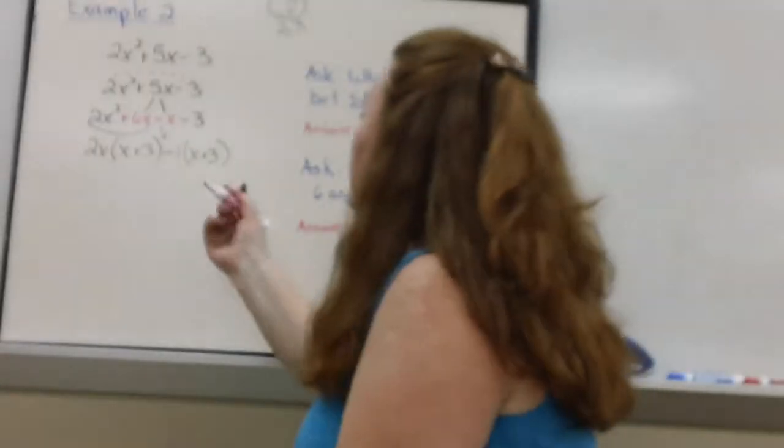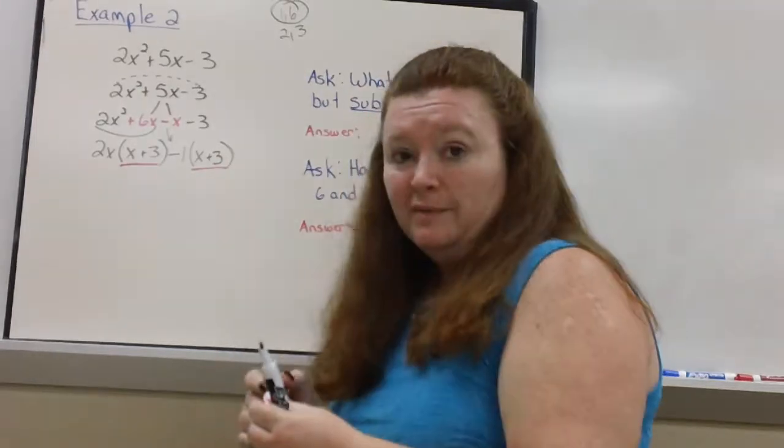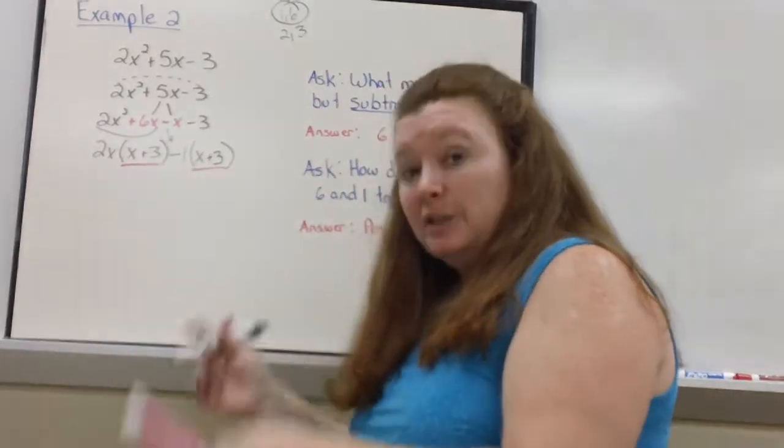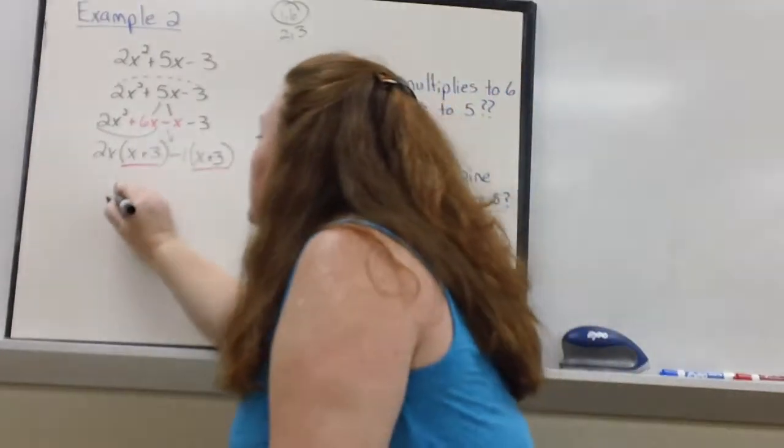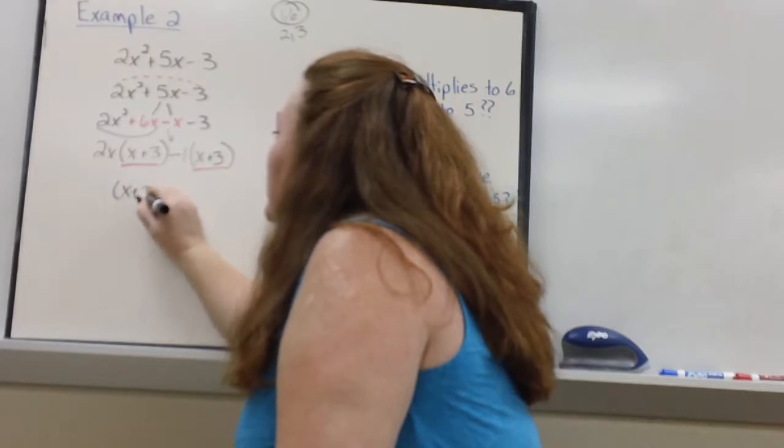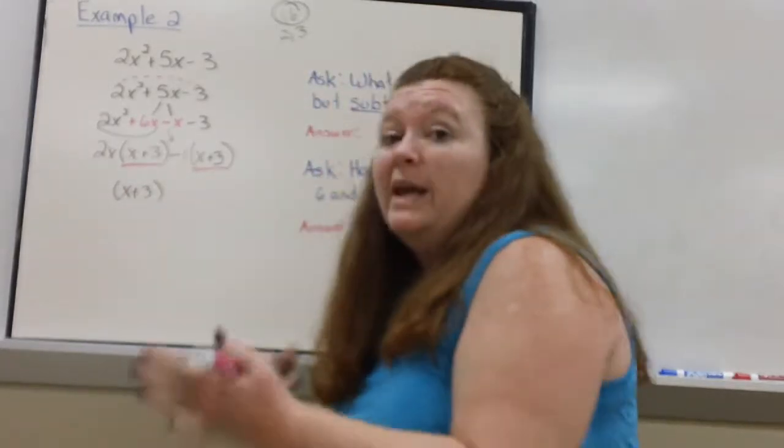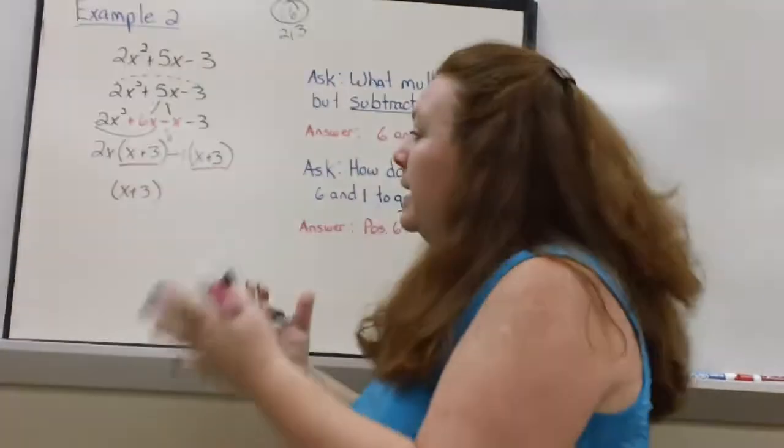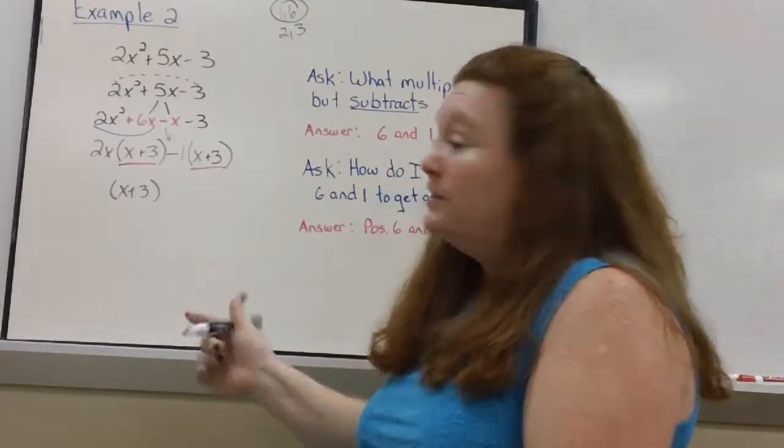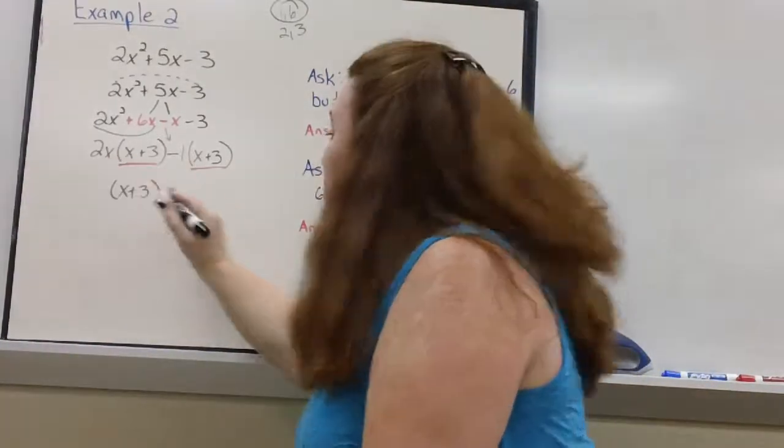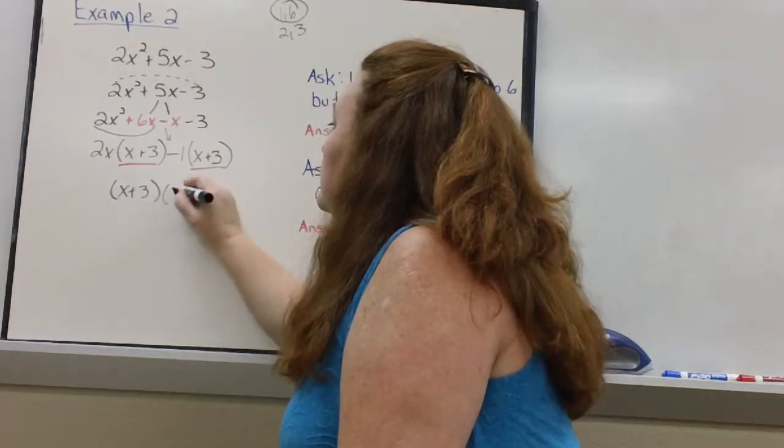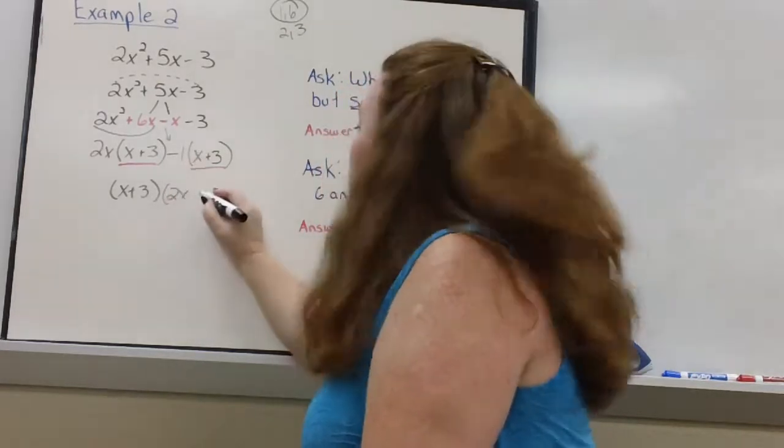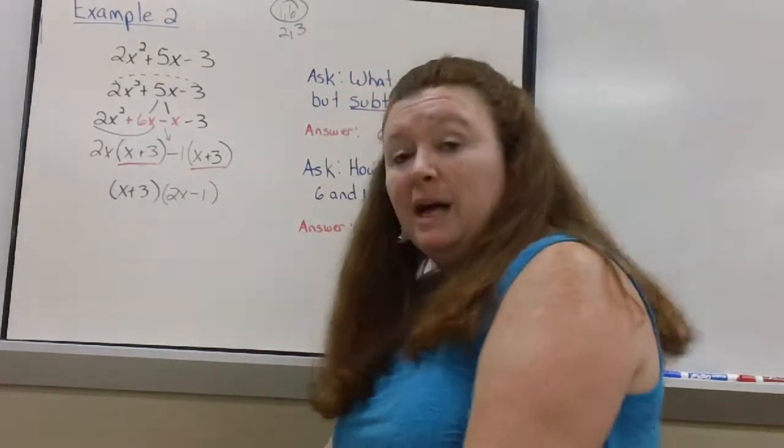So I have two terms with a common factor of an x plus 3. So I'm going to take the x plus 3 out to the front. And ask myself, when I divide both terms by x plus 3, what's left? Over here I have a 2x and a minus 1. And I'm done. It's a factor.